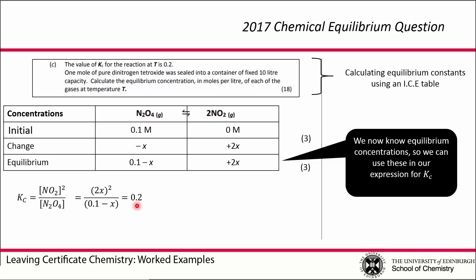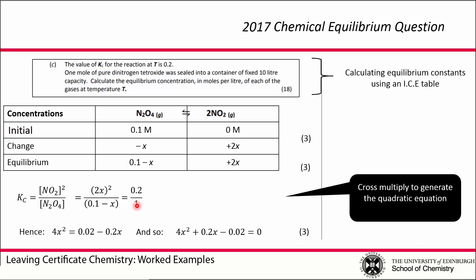We need to solve for x by cross-multiplying. We get (2x)² × 1 = 4x², and (0.1 − x) × 0.2 = 0.02 − 0.2x. Rearranging this into a quadratic expression gives us 4x² + 0.2x − 0.02 = 0, which gives us another three marks.